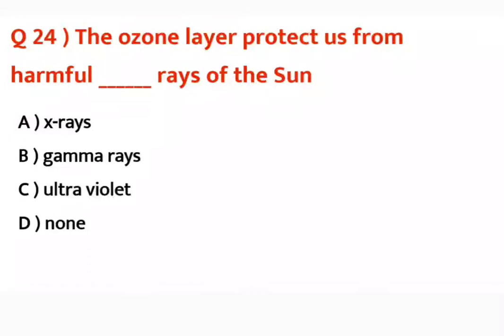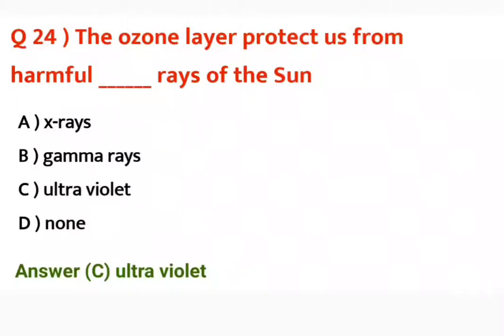Question number twenty-four: The ozone layer protects us from harmful dash rays of the sun — X-rays, gamma rays, ultraviolet, or none? Correct answer is ultraviolet. The ozone layer protects us from harmful ultraviolet rays of the sun.